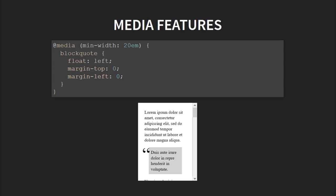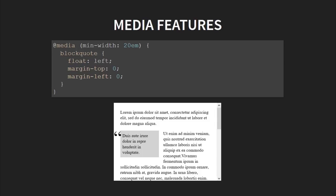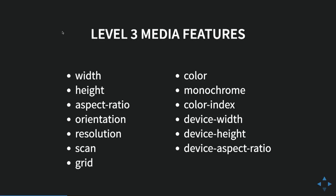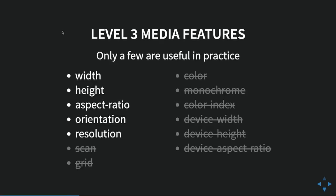Moving on — CSS media queries level 3 added media features. Now we're not categorizing the device as we were with media types; we're asking a question about it. So if the width of my page is more than 20em, I want to style my block quotes differently — resize so they're floated, and it looks different. Pretty basic, still useful. Media queries level 3 has more than width, though. There's a bunch of things you can test against, though a bit more than half of them are not terribly useful.